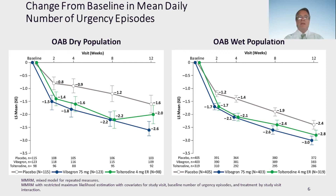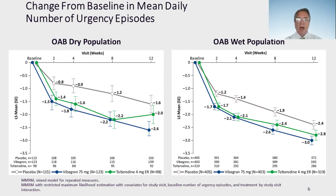The change from baseline in mean number of urgency episodes is demonstrated on this slide. The OAB dry population is on the left and the OAB wet population is on the right. Vibegron separated and was statistically significantly better than placebo at all time points during the study — 2, 4, 8, and 12 weeks — in both the dry and the wet populations.